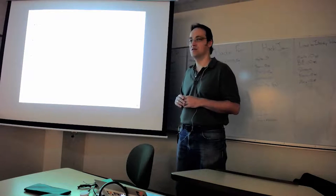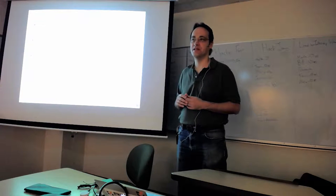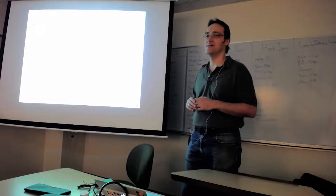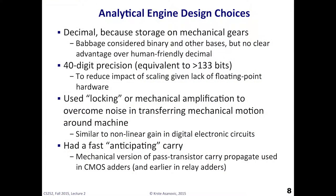Now, one was that he chose decimal for the number representation inside the machine. So why did he choose decimal? He actually considered binary, other bases. But the reason he chose decimal was the thing was going to be built with mechanical gears. And there was no clear advantage to binary if you're building things with mechanical gears. And the other advantage, one big advantage of decimal was, you could print numbers on the gears and humans could just debug the machine by looking at it and seeing what numbers were stored in which location of memory.